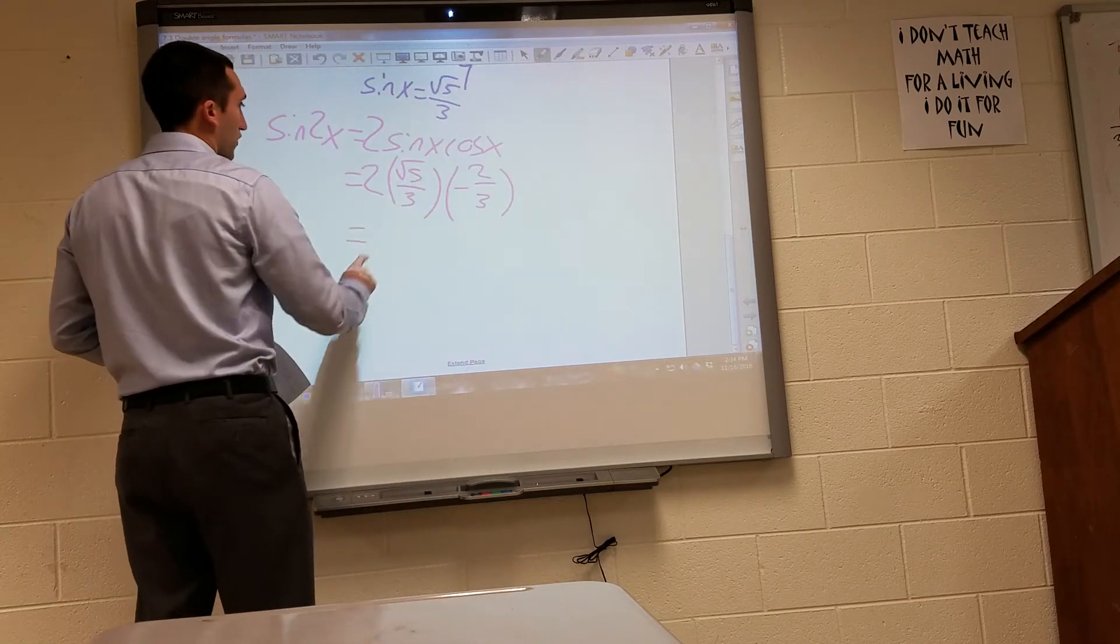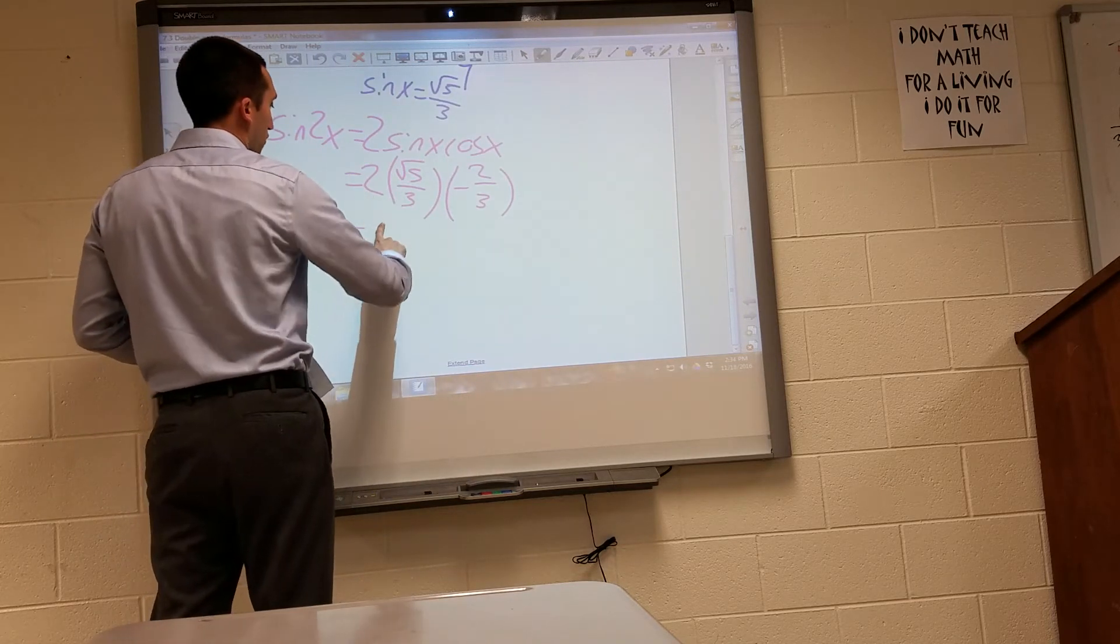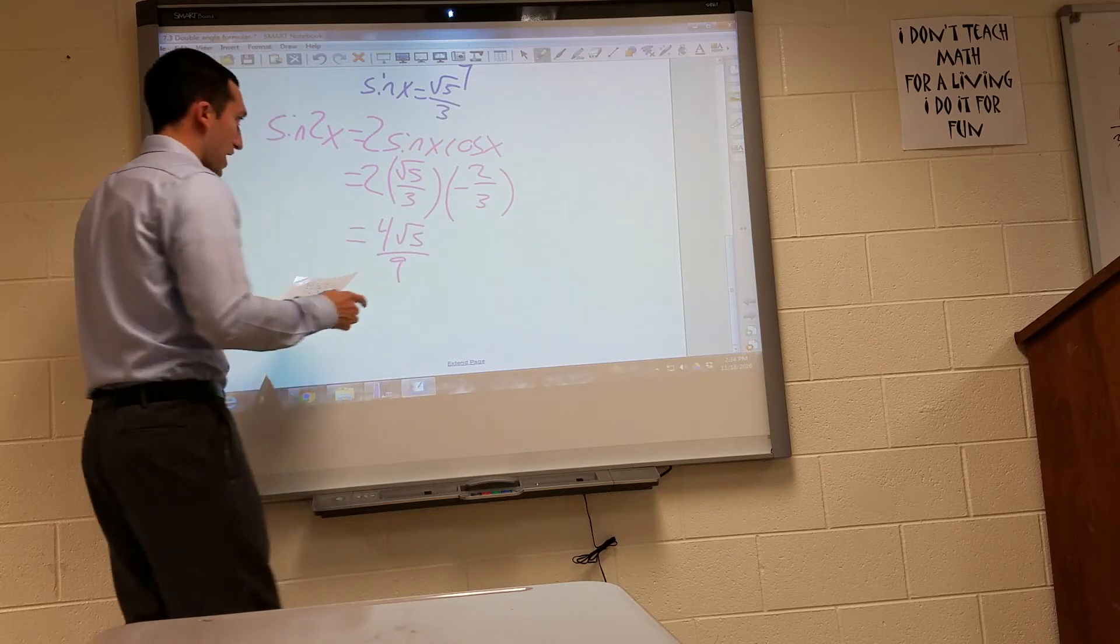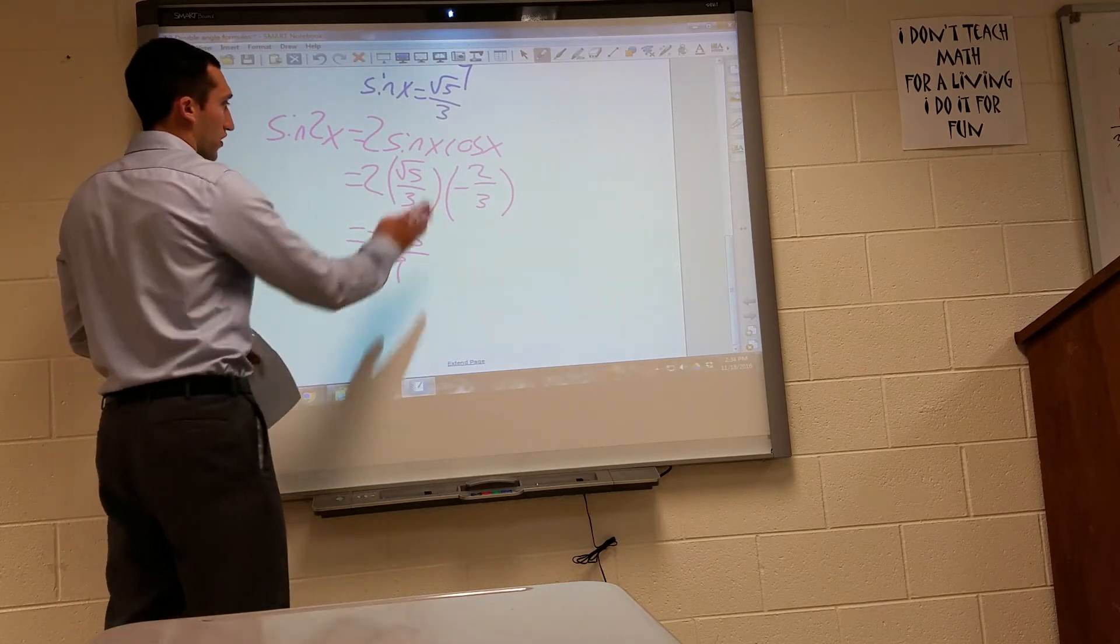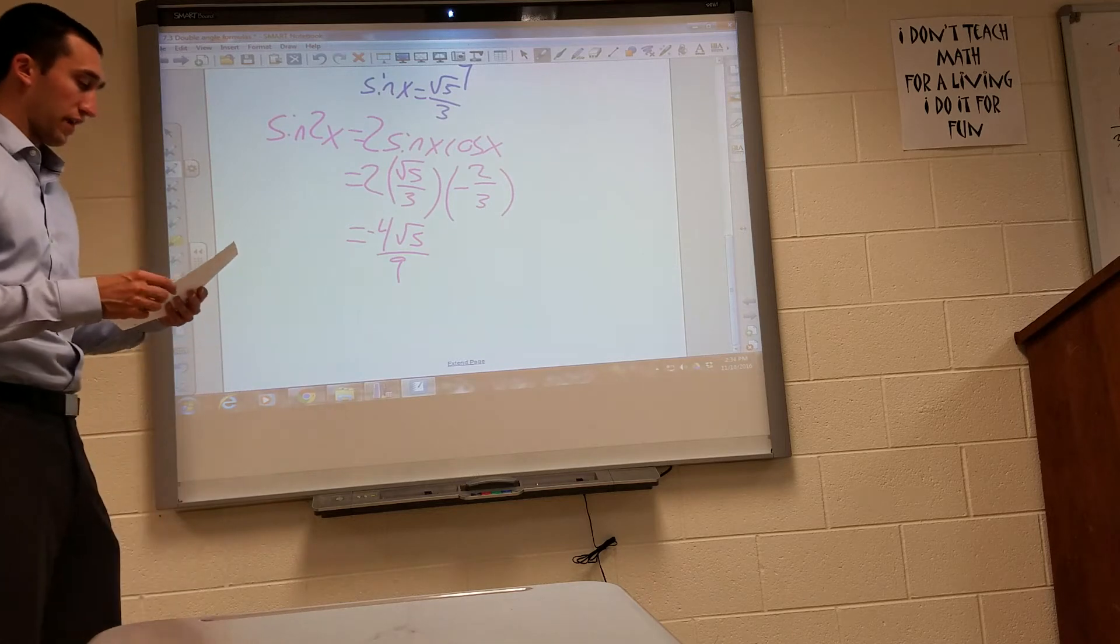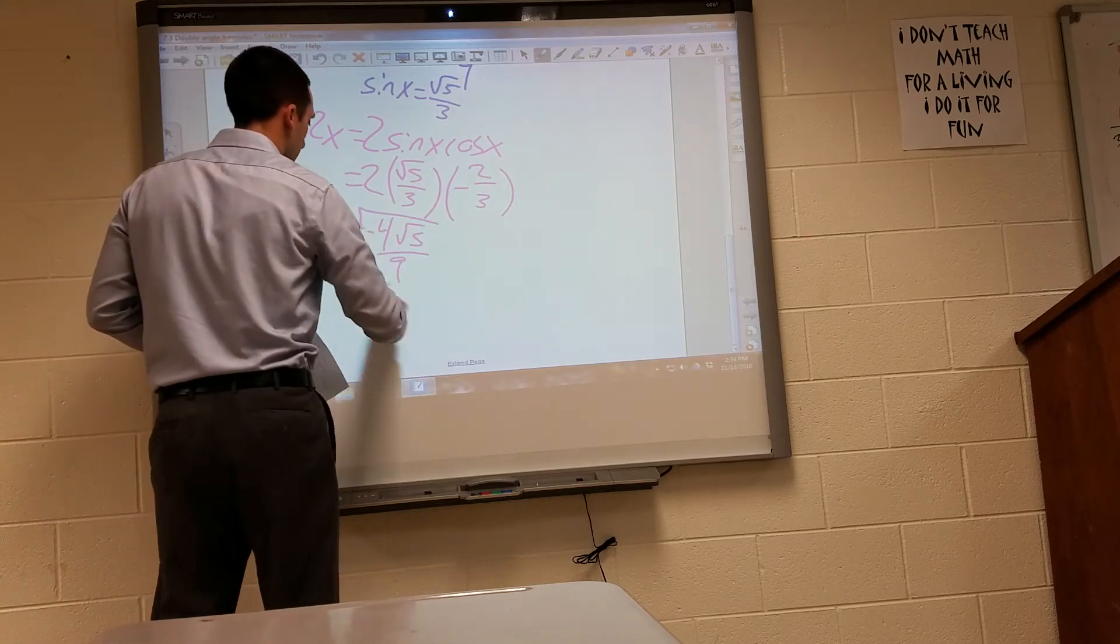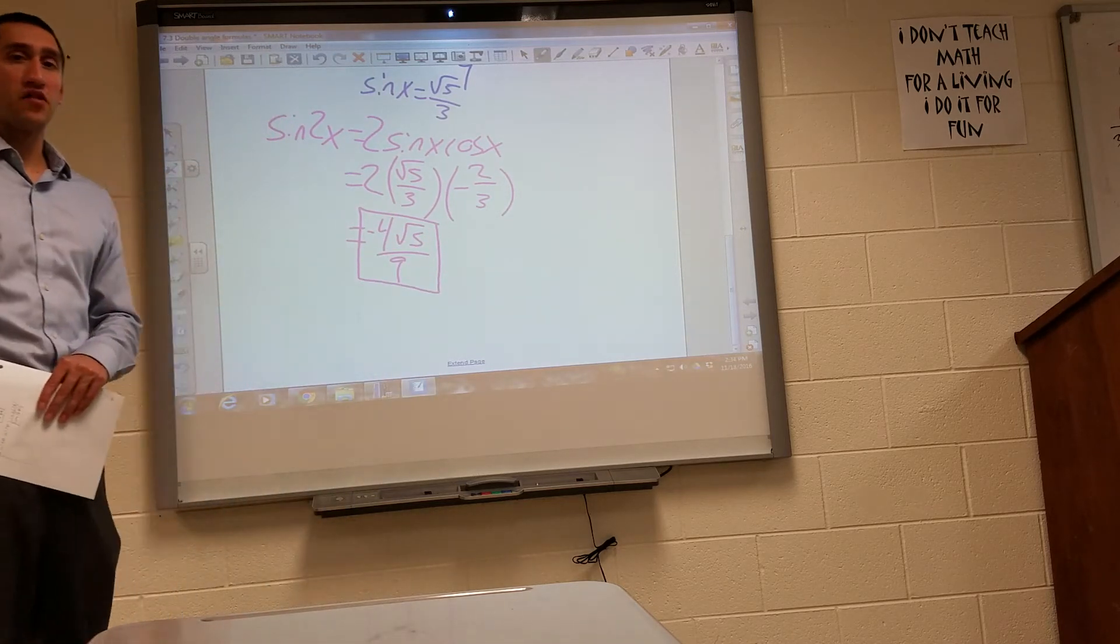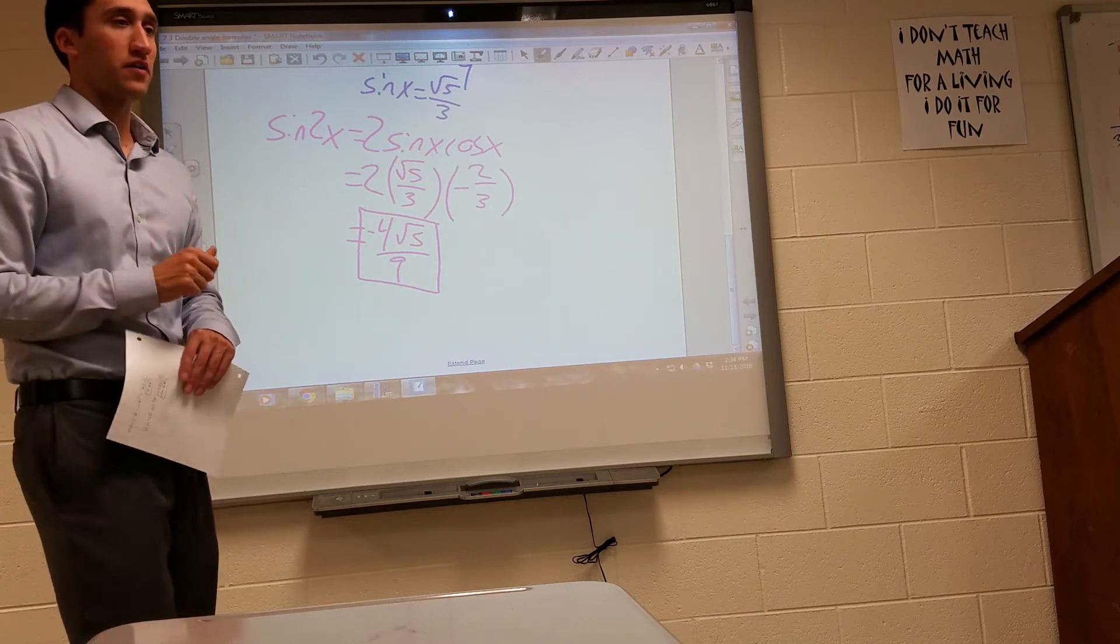And I multiply that by negative two-thirds. For an answer of, let's see, I get 4 radical 5 over 9, and that's negative, since I have just the one negative value. Okay, so I found sine of 2x, cosine of 2x, double angle formulas.